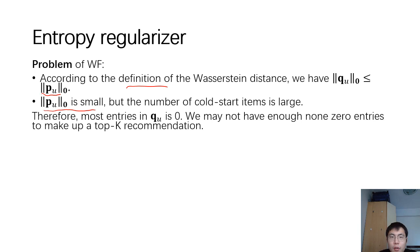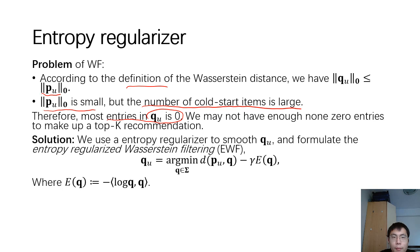But the number of cold start items should be large. Therefore, most entries in q_u is zero. The problem is that we may not even have enough non-zero entries to make up a top-K recommendation. To solve this problem, we incorporate an entropy regularizer to smooth q_u.